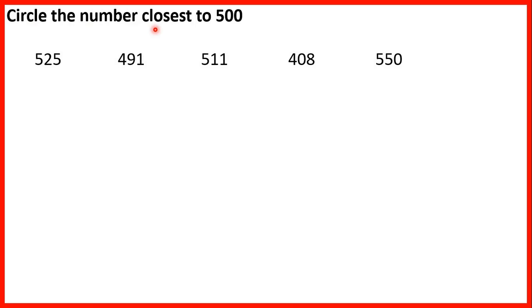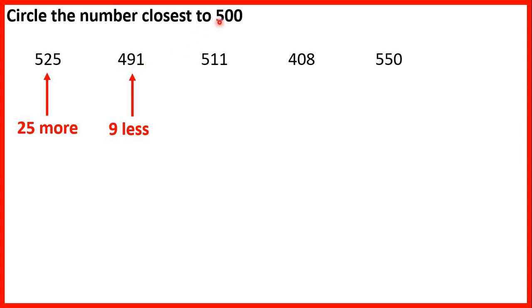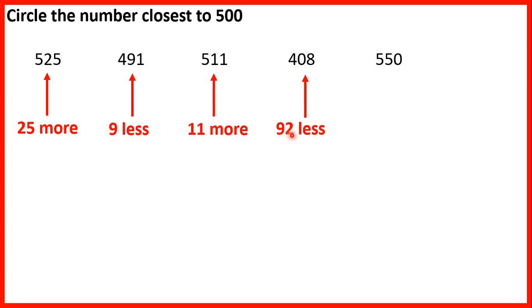Circle the number closest to 500. First we have 525, so that's 25 more than 500. Now 491 is 9 less — if we add 9 to 491 that will give us 500, or we could work out that 500 minus 491 is 9. 511 is 11 more. 408 is 92 less because 8 and 92 make a number bond to 100, and with another 100 that would give us 500 altogether.